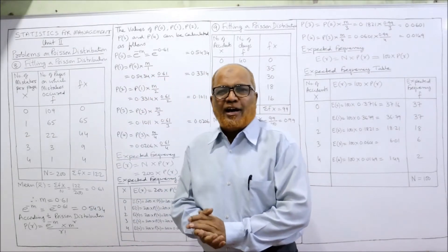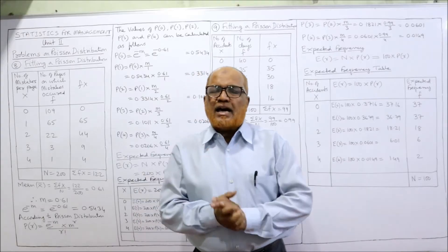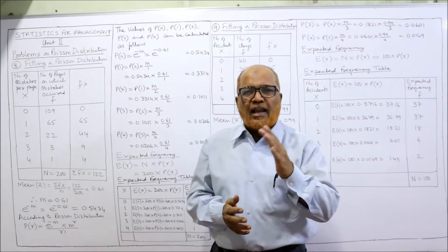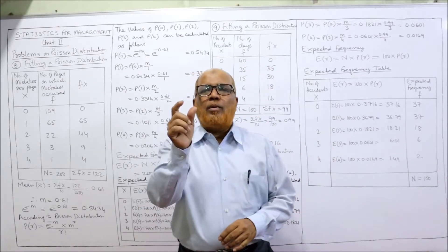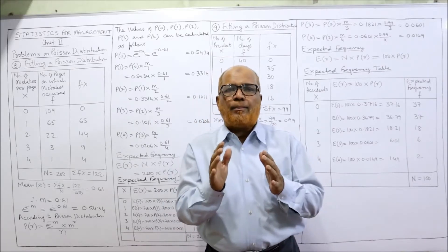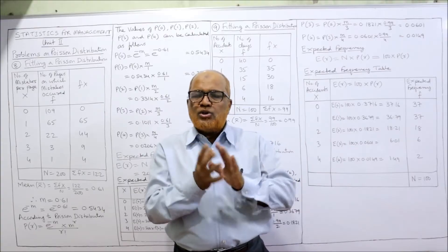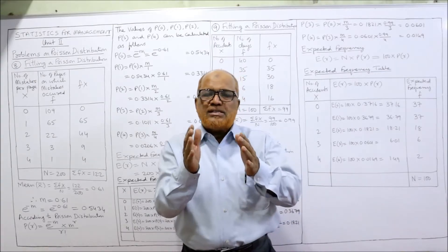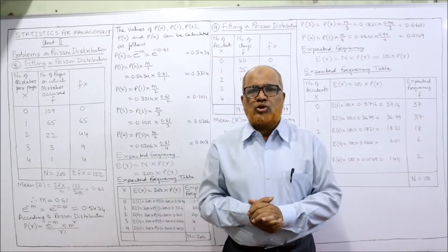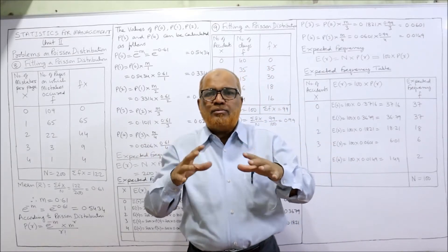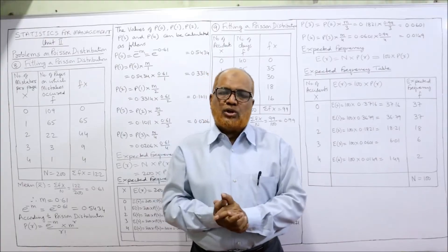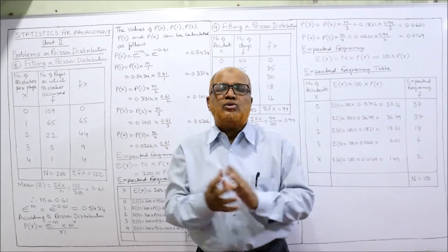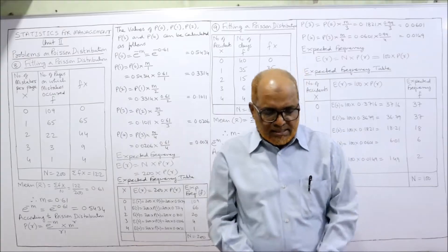Hello viewers, welcome to my channel. I'm Hashem Ali Khan. This is the last and final video on Poisson distribution. So far, seven problems have been completed in the last two videos. I have explained how to find out the probability of R successes by applying the Poisson distribution. Poisson distribution is applied whenever N is large and P is very small — it is a limiting factor of binomial distribution, used for rare events.